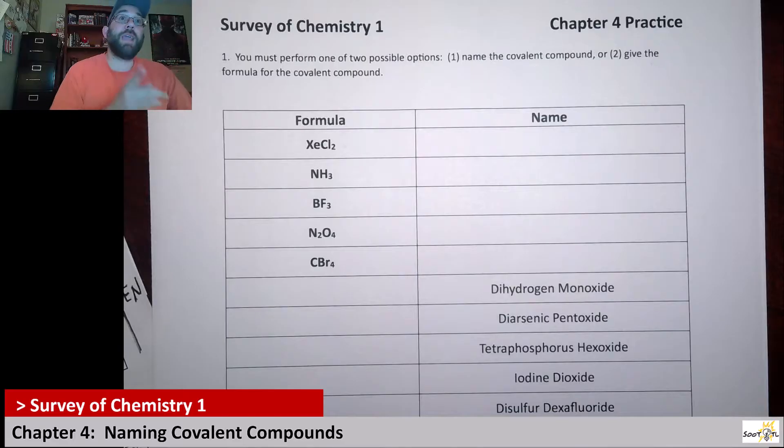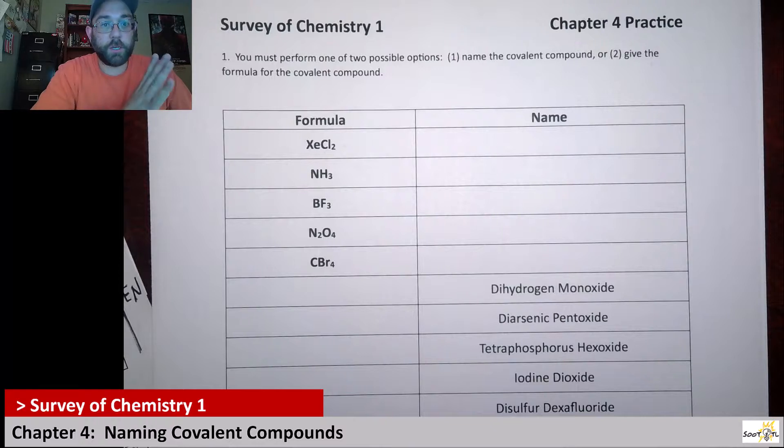So with covalent compounds we actually have to specify the number of atoms that are in the formula, especially if they deviate from one, if it's more than one. A lot of times we don't have to worry about the first atom. If it's only one we don't have to specify the number one, it's understood.